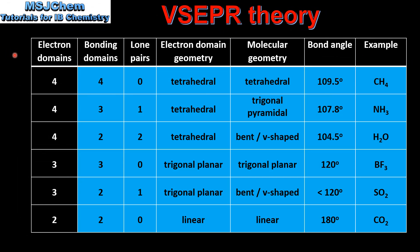Let's end with a summary. This table summarizes the electron domain geometries, the molecular geometries, and the bond angles that you need to know for standard level chemistry.